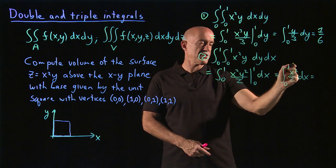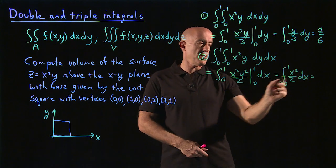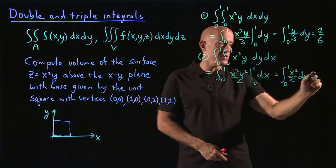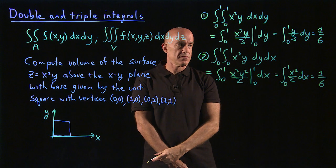This becomes x cubed over 2 times 3, which is 1/6 in the upper limit and 0 in the lower limit. So again, we get 1/6.